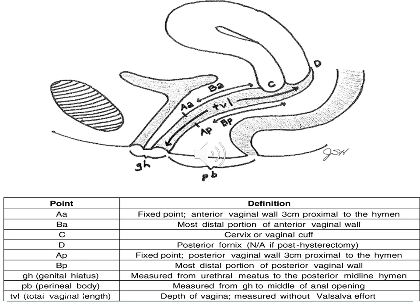Genital hiatus is measured anteroposteriorly from the middle of the external urethral meatus to the posterior midline hymen. Perineal body is measured from the posterior margin of the genital hiatus to the midpoint of the anal opening. Total vaginal length is the depth of the vagina and should be measured without Valsalva.